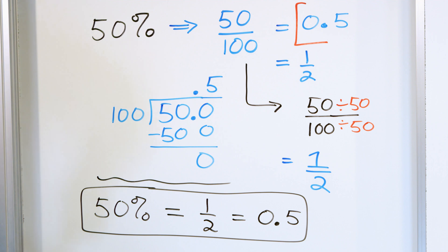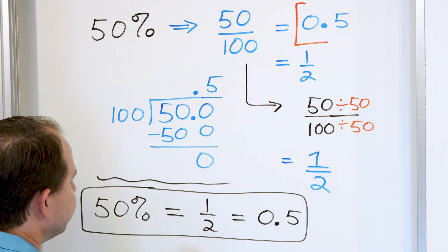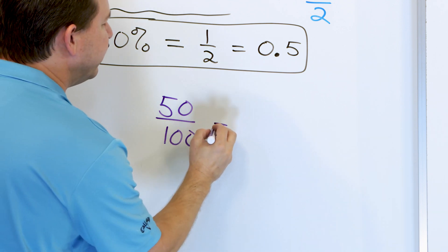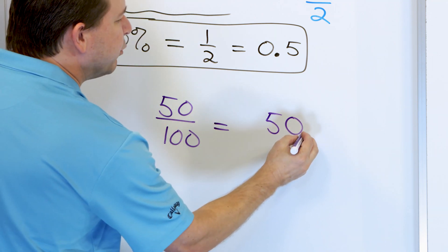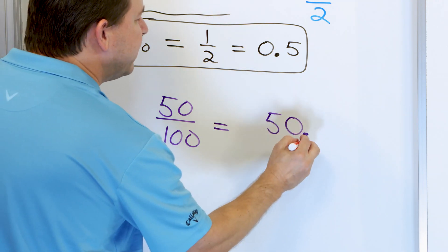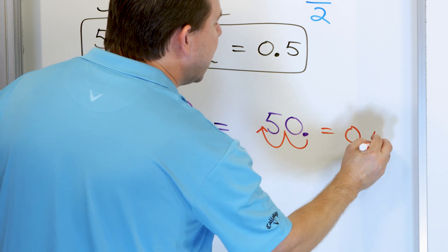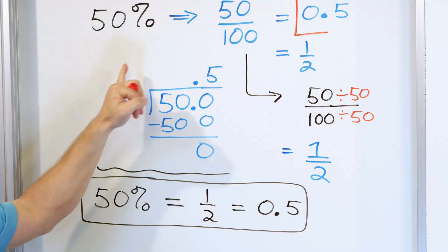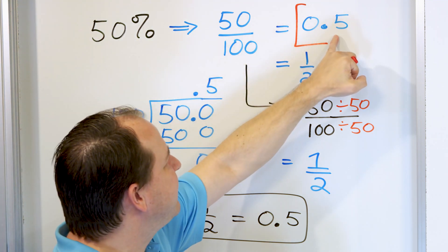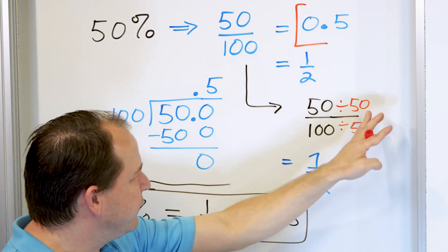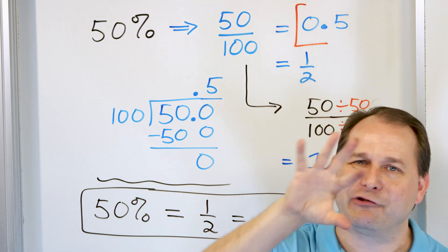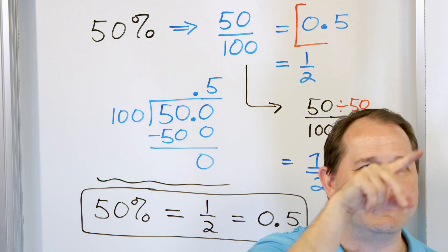Before moving on, I want to remind you that when you divide any number by 10 or 100, there's a much simpler way to do it. This 50 always has an invisible decimal point at the end — all numbers do. When you divide by 10, move the decimal one spot to the left. When you divide by 100, move the decimal two spots to the left. So instead of doing long division, since we're always dividing by 100, we always move the decimal two spots to the left to get the decimal equivalent.